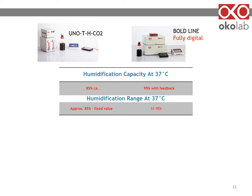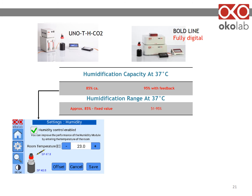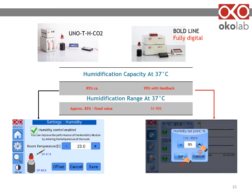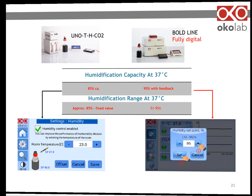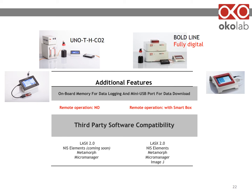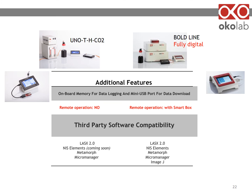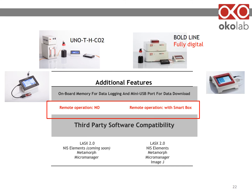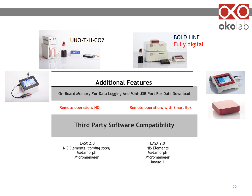Humidity for UNO THCO2 is achieved through an open-loop humidity module — after enabling it, you input room temperature and the system will optimize parameters to reach approximately 85% humidity. Bold-line fully digital has a sensor and feedback, allowing you to input the exact percentage of humidity you want in the range 51% to 95%. UNO THCO2 has onboard memory, while the bold-line OcoTouch is currently being redesigned to include that feature. Bold-line can also be remotely operated using the optional smart box, and both systems are compatible with third-party software.